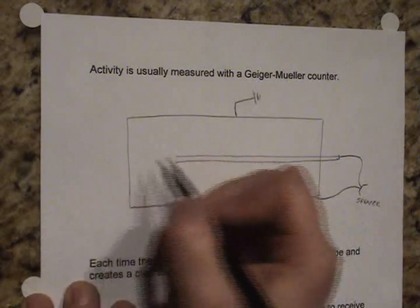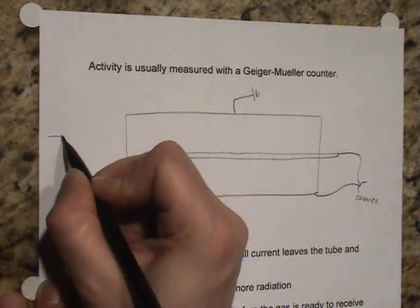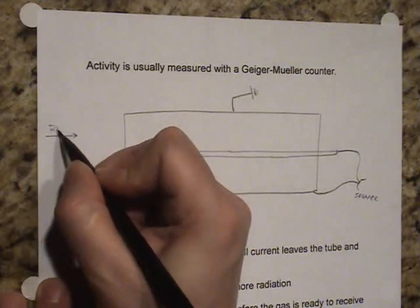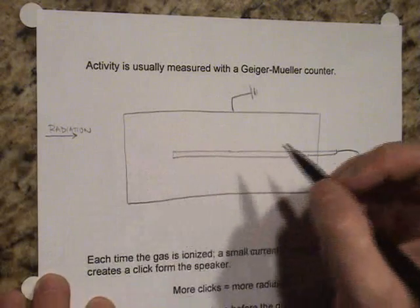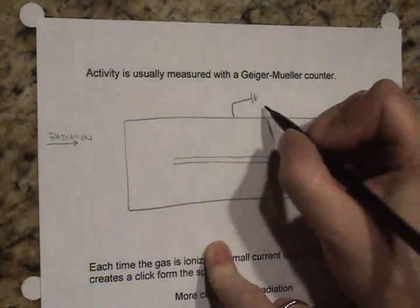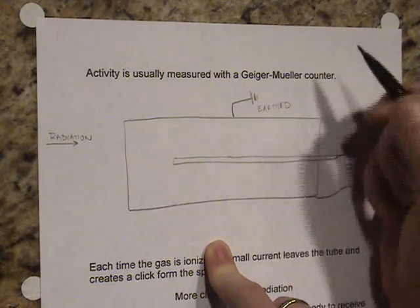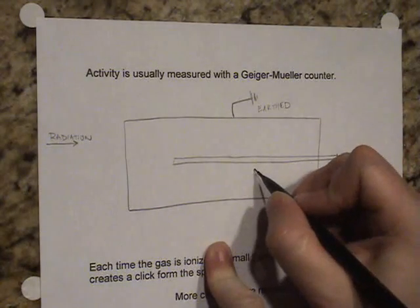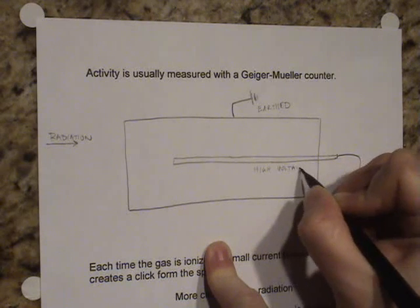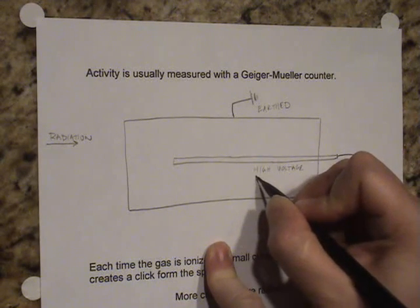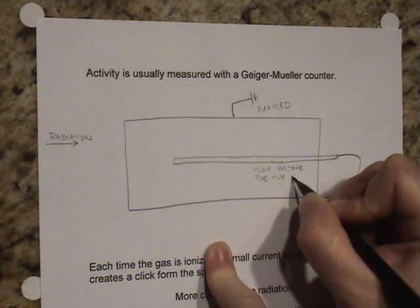So what ultimately happens is they point this device at the radioactive source. I would see that radiation is coming in from the left over here. Now what essentially has happened is that the case is earthed or grounded. And this is a high voltage positive electrode.